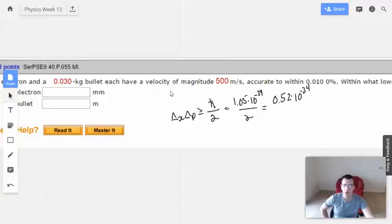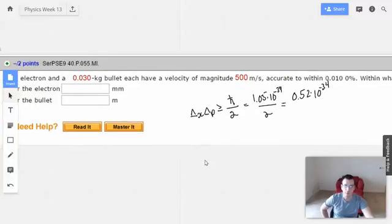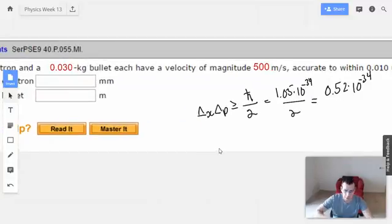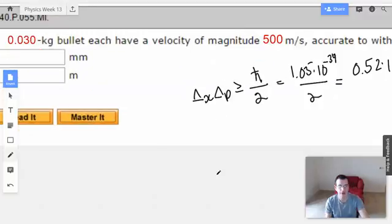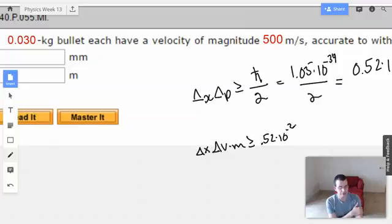I'm going to rewrite this as delta x delta v times mass. Because the mass we're going to assume doesn't change here, because they're only going 500 meters per second. Greater than or equal to 0.52 times 10 to the negative 34th.